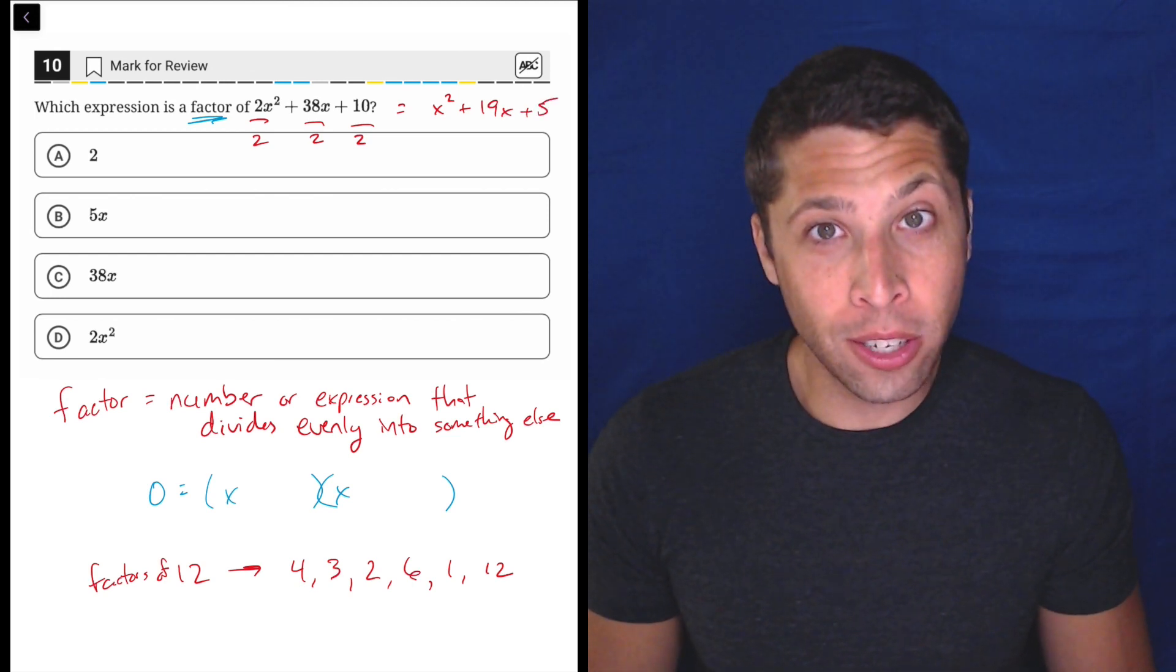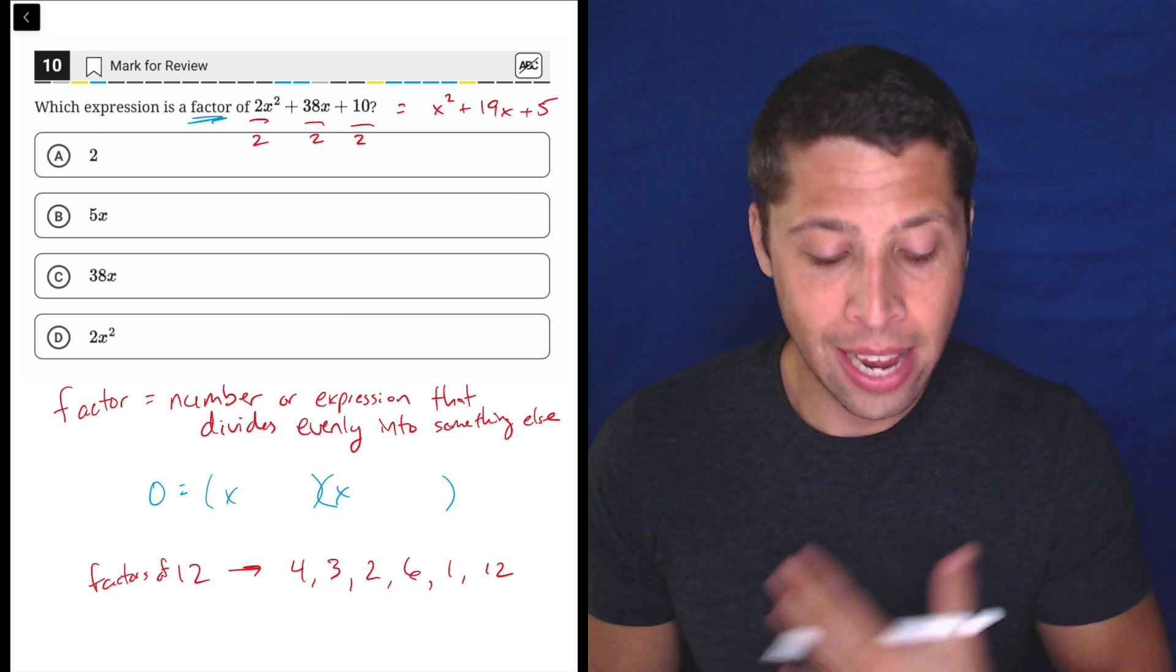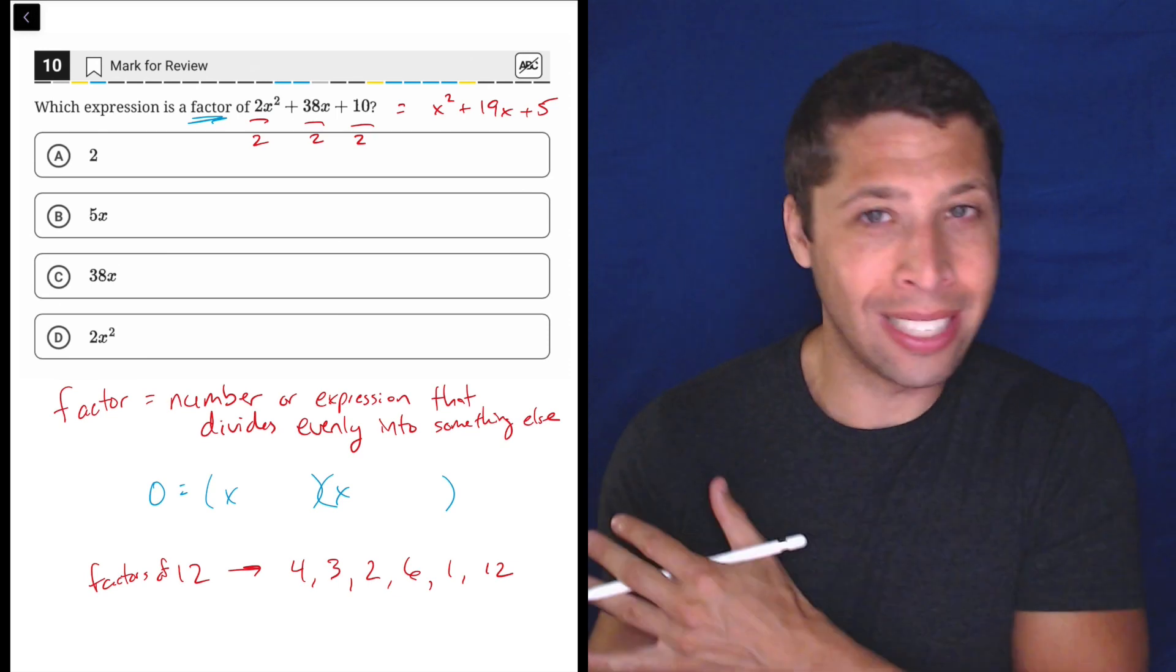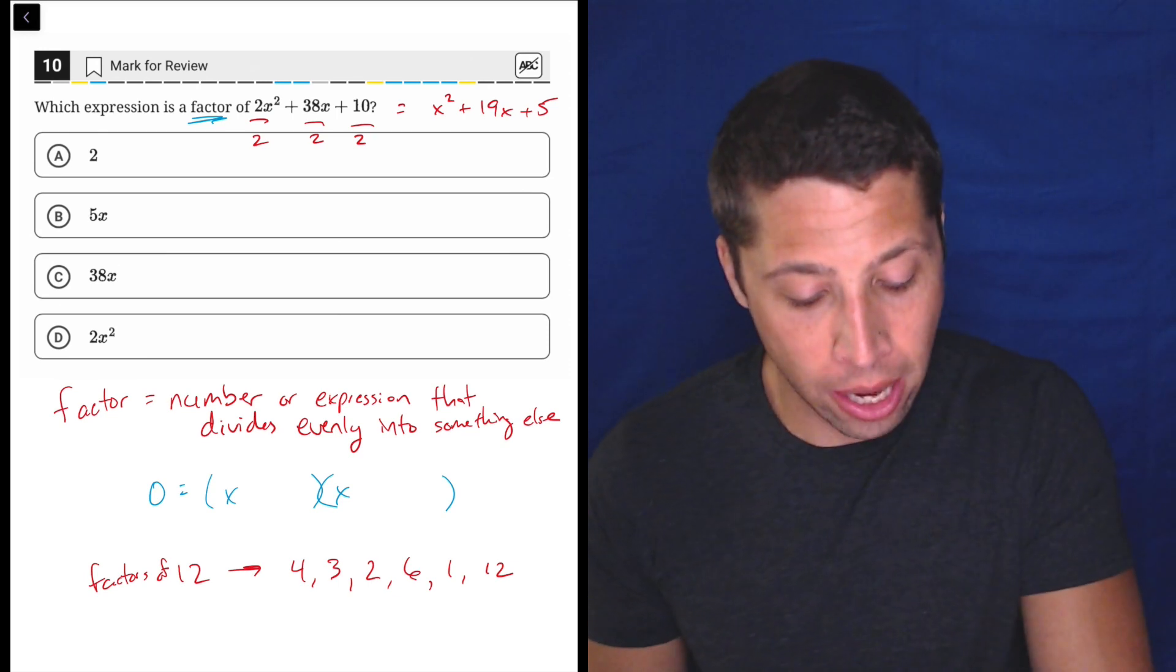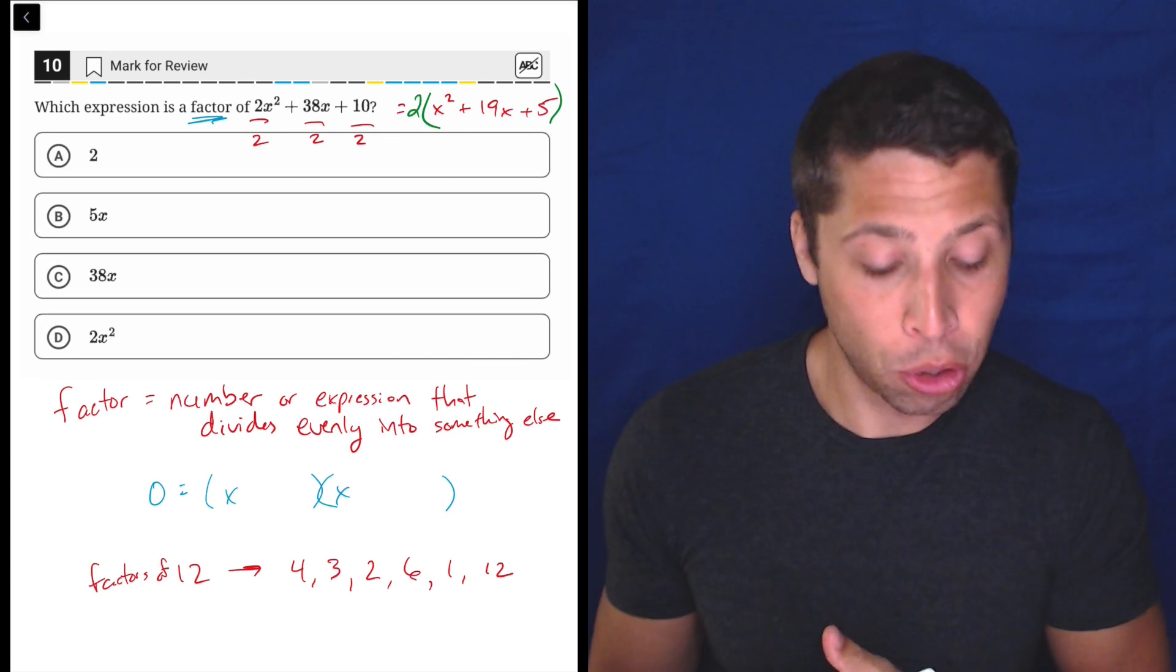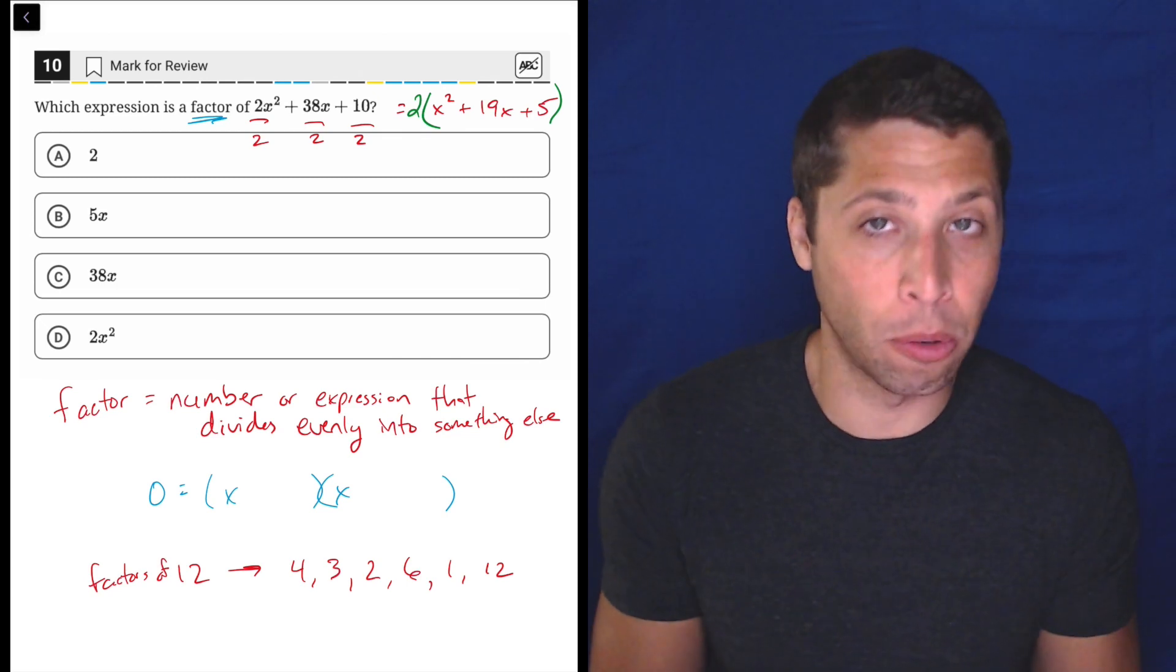And because there's no equal sign here, technically, if we were to simplify this, the 2 wouldn't disappear when we divide it out. It would just kind of come out and be attached through distribution now. So that's technically what we're supposed to do here.